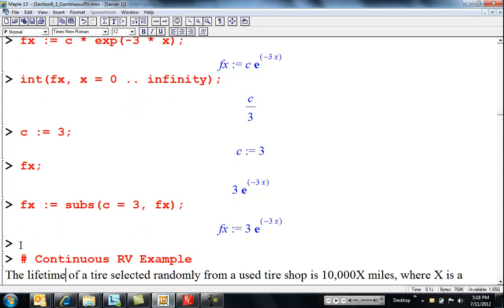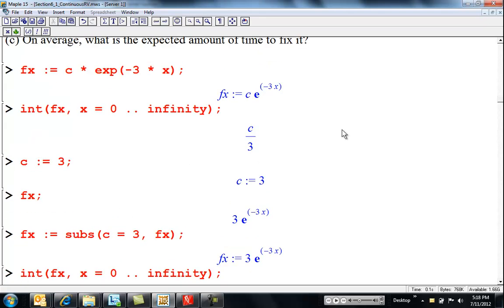subs c equal to three into f of x. Let's make that my new f of x, which, okay, maybe that was redundant code. But let's make sure he's valid. So if I integrate f of x from x equals zero to infinity, I should get one. So everything's legal. c is three. Okay, nice.